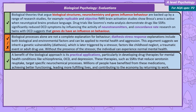For most people, the most obvious positive evaluation of the biological approach is the real-life applications of these theories. Biological theories of mental health conditions like schizophrenia, OCD and depression have led to the development of highly effective drug therapies that act on neurochemical processes. One example is the antidepressant SSRIs, which work by reducing serotonin reuptake. These drugs have helped millions of people return to normal functioning, live more fulfilling lives, and contribute to the economy by returning to work.